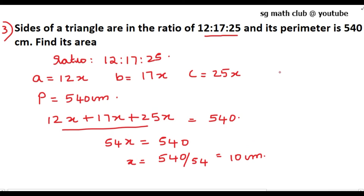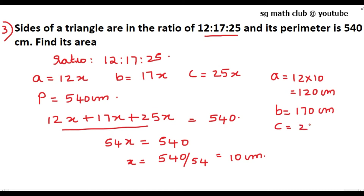Therefore the sides are: a = 12 × 10 = 120 cm, b = 17 × 10 = 170 cm, and c = 25 × 10 = 250 cm. Now we will find the area of the triangle using Heron's formula.